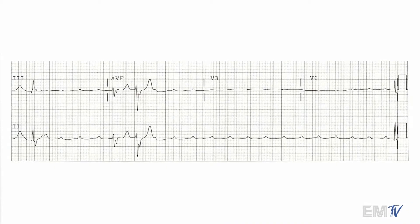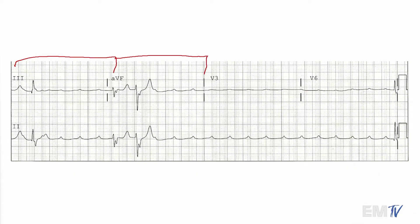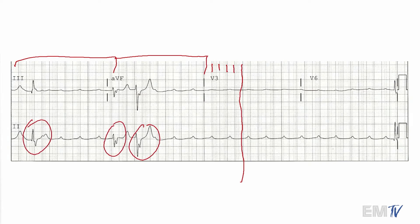The method I use for cutting this into a 6 second strip to make the math easy when I'm calculating rate is I'll take 2 of the sections which are equal to 2.5 seconds each and then I'll add 5 large boxes to make our 6 second strip. With my 6 second strip I'll go ahead and count my QRS complexes. I'm seeing 3, so I would say that this is 30 BPM.